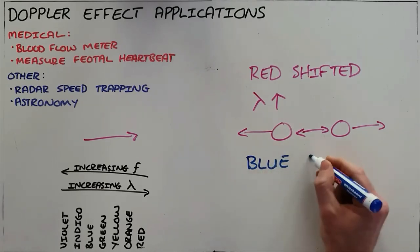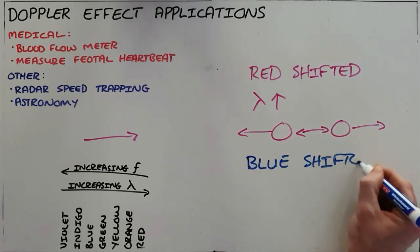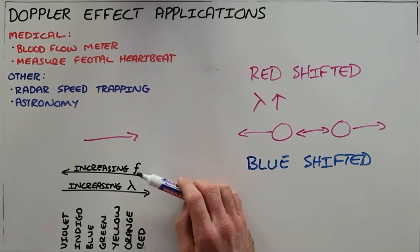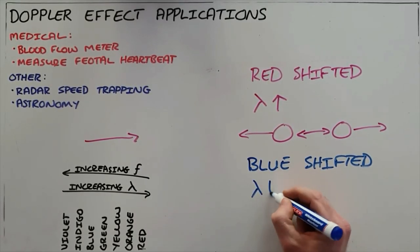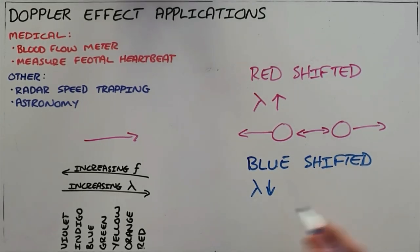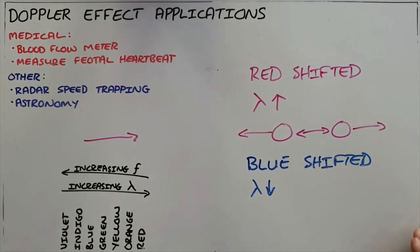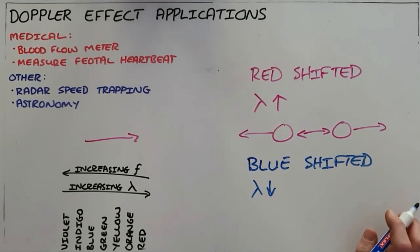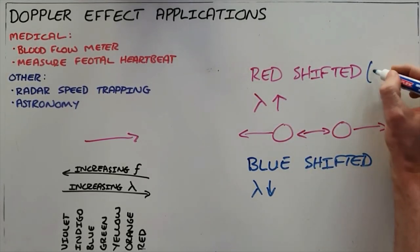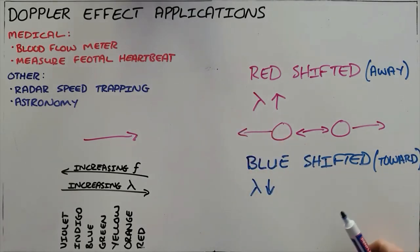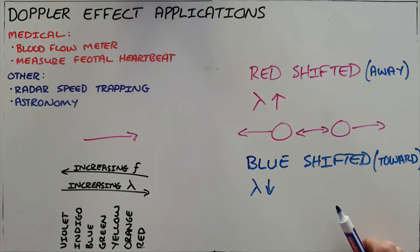The opposite of a red shift is a blue shift, which occurs when two objects move closer together. As they approach, the wavelength decreases, the frequency increases, and the light becomes more blue. Sources showing a blue shift are therefore moving towards each other. We use red shift to know objects are moving apart and blue shift to know they are moving toward each other. This also shows that the Doppler effect applies not only to sound waves but to all types of waves, including the electromagnetic spectrum.